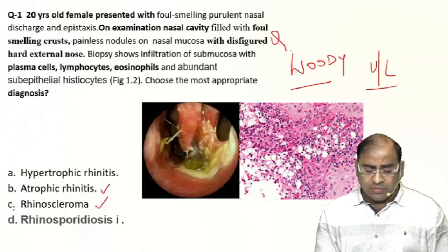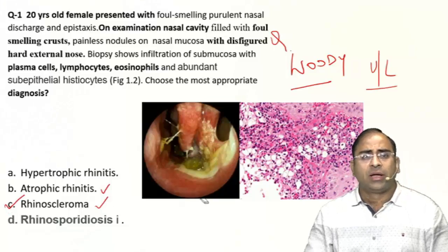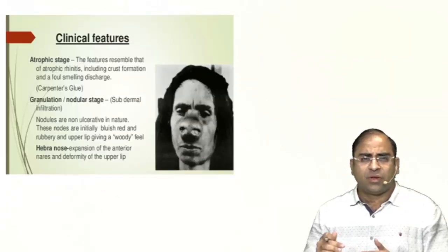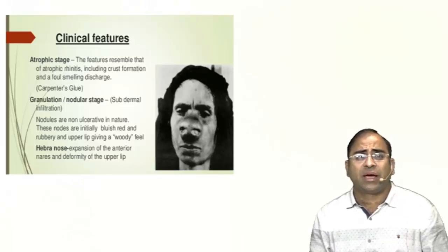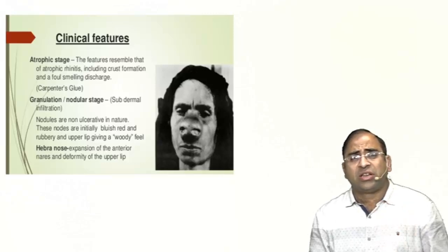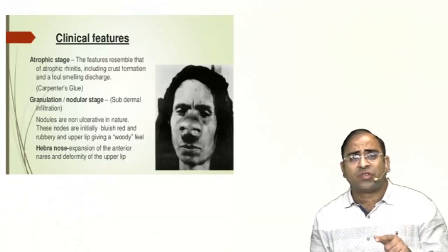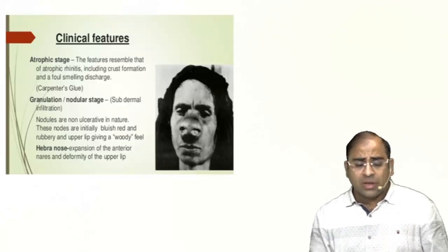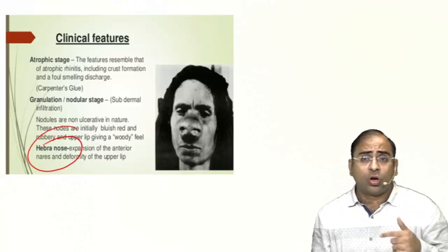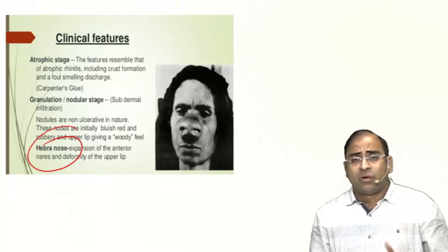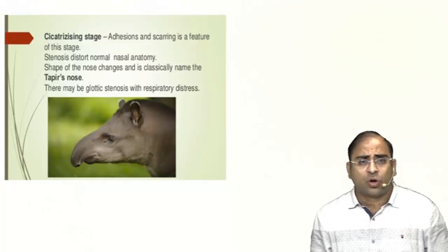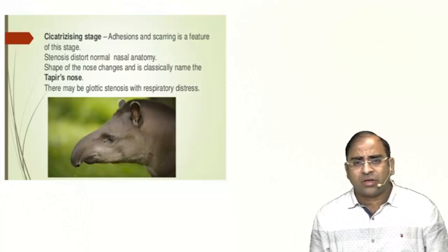The right answer to this question is rhinoscleroma. Important stages of rhinoscleroma: in the atrophic stage, the patient has crust formation and foul-smelling discharge — sometimes the word 'carpentry glue' is used for the discharge. In the granulomatous/nodular stage, you get painless nodules on the nasal mucosa, along with 'Hebra nose' — expansion of the anterior part of the nose — or a 'tapir nose.' This stage can lead to respiratory distress.